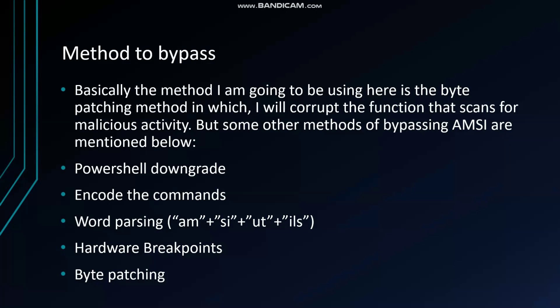So the function itself is corrupted. Some of the other methods include PowerShell downgrade — basically in older versions of PowerShell, AMSI was not present, so we can use that to bypass it. We can also encode commands in base64 and decode at runtime, or use word parsing, for example dividing strings into multiple bytes, and that used to bypass AMSI.